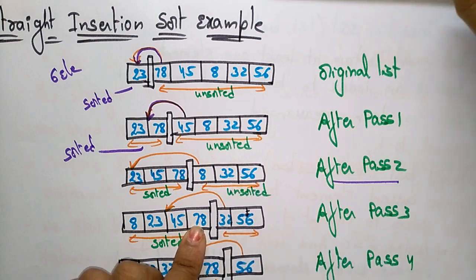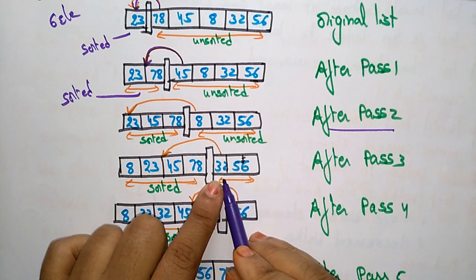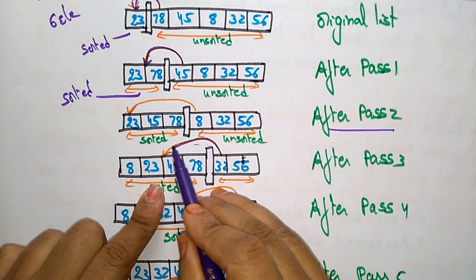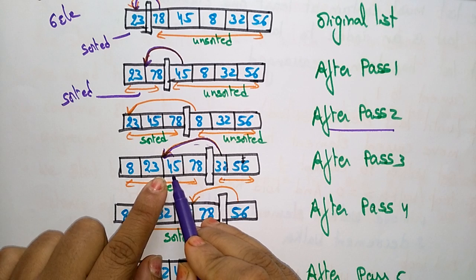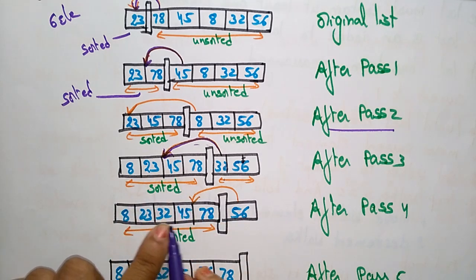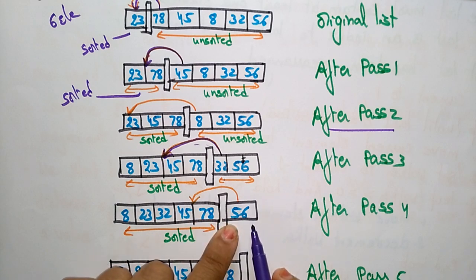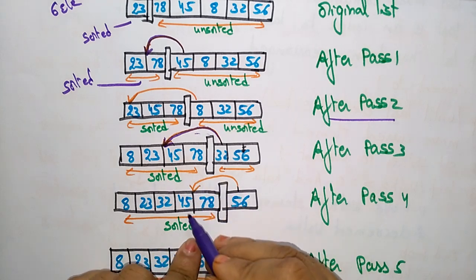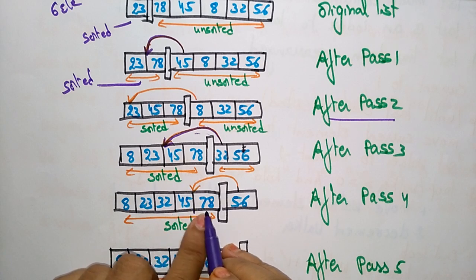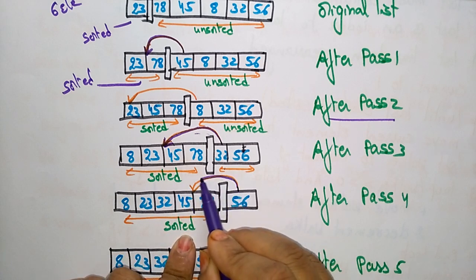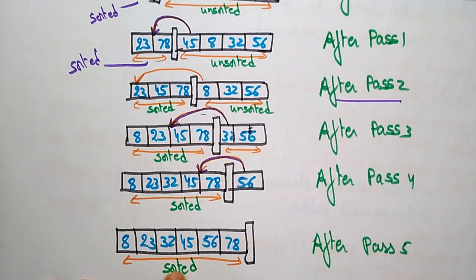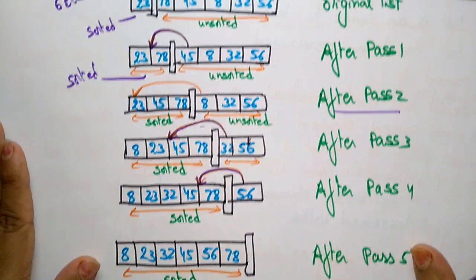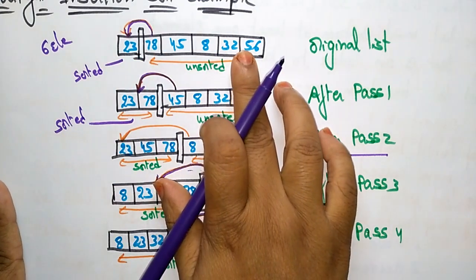Now shift the first element in the unsorted list to the sorted list. 32 will be placed in between 23 and 45, giving 8, 23, 32, 45, 78. After pass four, the final element 56 has to be shifted to the sorted list, placed in between 45 and 78. The final sorted list is 8, 23, 32, 45, 56, 78.